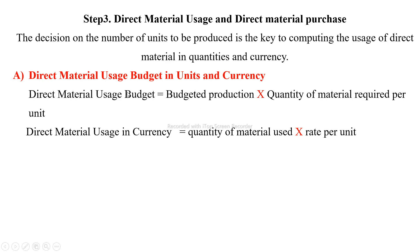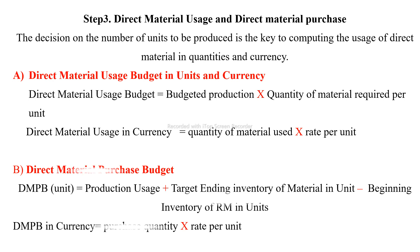If you have the direct material used, you can then calculate the direct material purchase. How much direct material must be purchased? A direct material purchase budget is based on the unit of production usage plus the required ending raw material inventory.